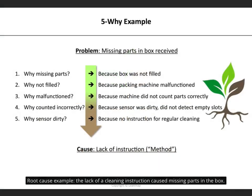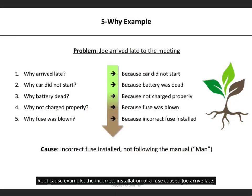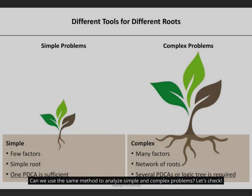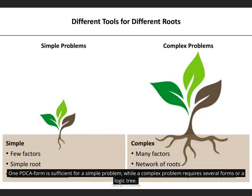Root cause example: the lack of a cleaning instruction caused missing parts in the box. Root cause example: the incorrect installation of a fuse caused Joe to arrive late. One PDCA form is sufficient for a simple problem, while a complex problem requires several forms or a logic tree.